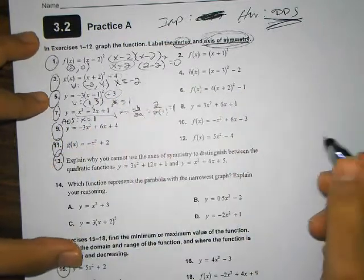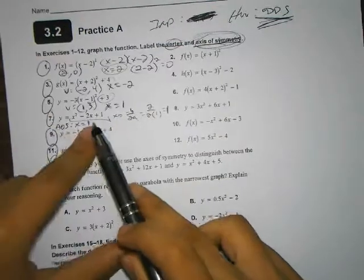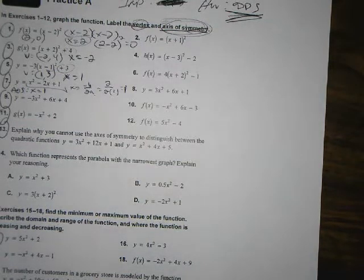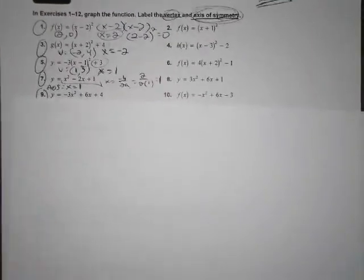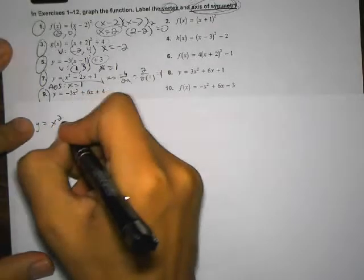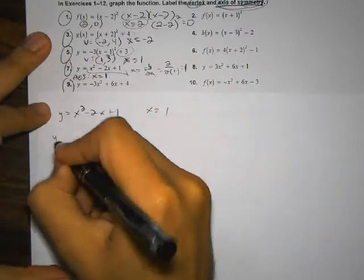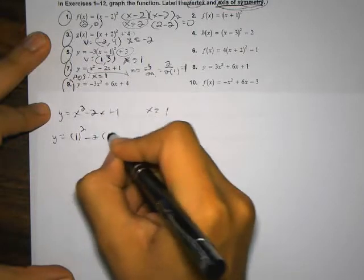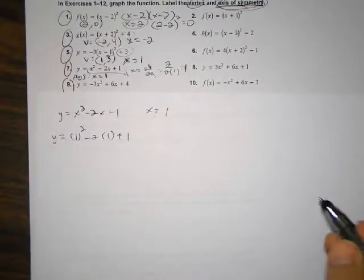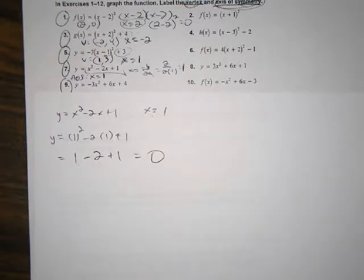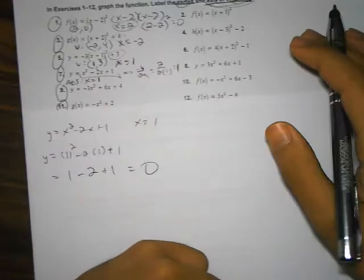And for my y value, I have to go ahead and substitute that right in there. So my function here is y equals x squared minus 2x plus 1. I'm going to substitute my x value of 1. That's y equals 1 squared minus 2 times 1 plus 1. So here I get 1 minus 2 plus 1. 1 minus 2 is negative 1, plus 1 is 0. So here my vertex is (1, 0).